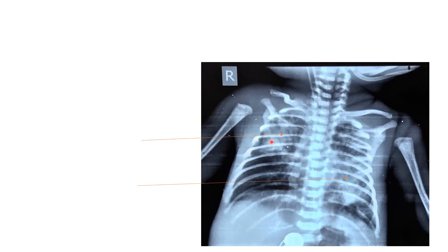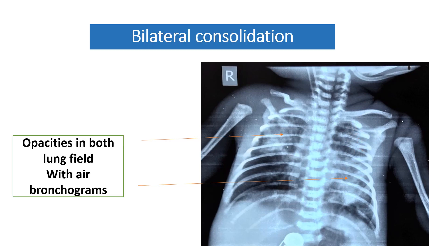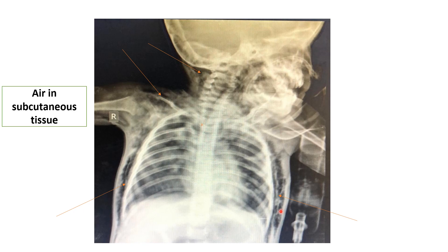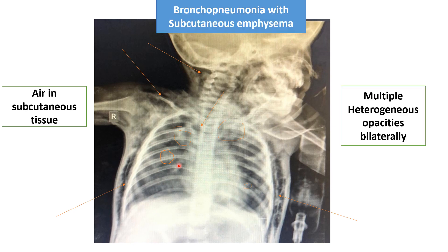In this x-ray, multiple opacities with air bronchogram are present in both lung fields — diagnosis: bilateral consolidation. Additionally, in the subcutaneous tissue of the chest wall and neck area, air is present — subcutaneous emphysema. This patient was having bronchopneumonia with subcutaneous emphysema; multiple heterogeneous opacities are present in both lung fields.